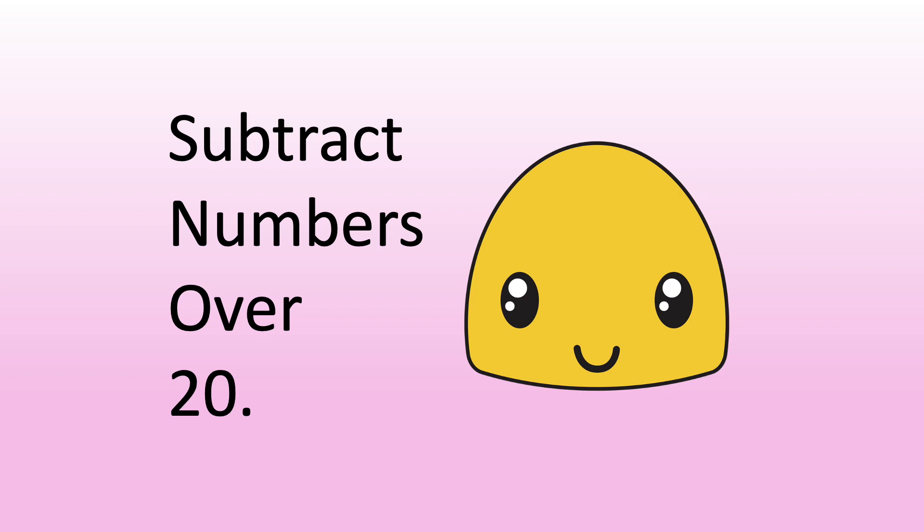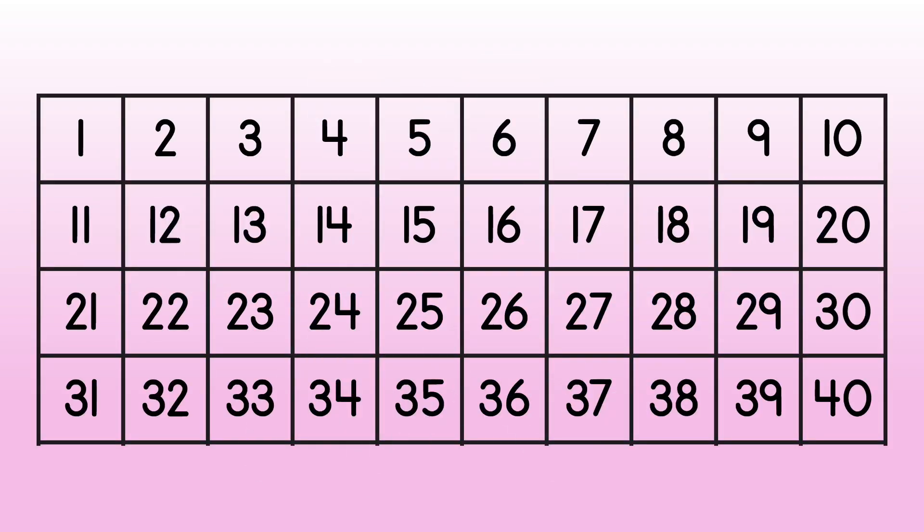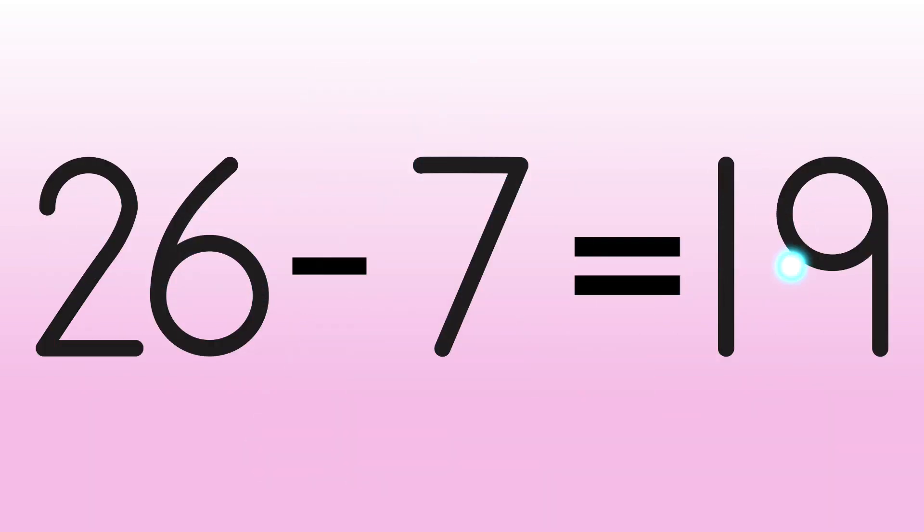Last, we can subtract from numbers over 20. 26 minus 7 equals blank. Find 26 on the hundreds chart. Count back 7. 1, 2, 3, 4, 5, 6, 7. We end on 19. The difference is 19.